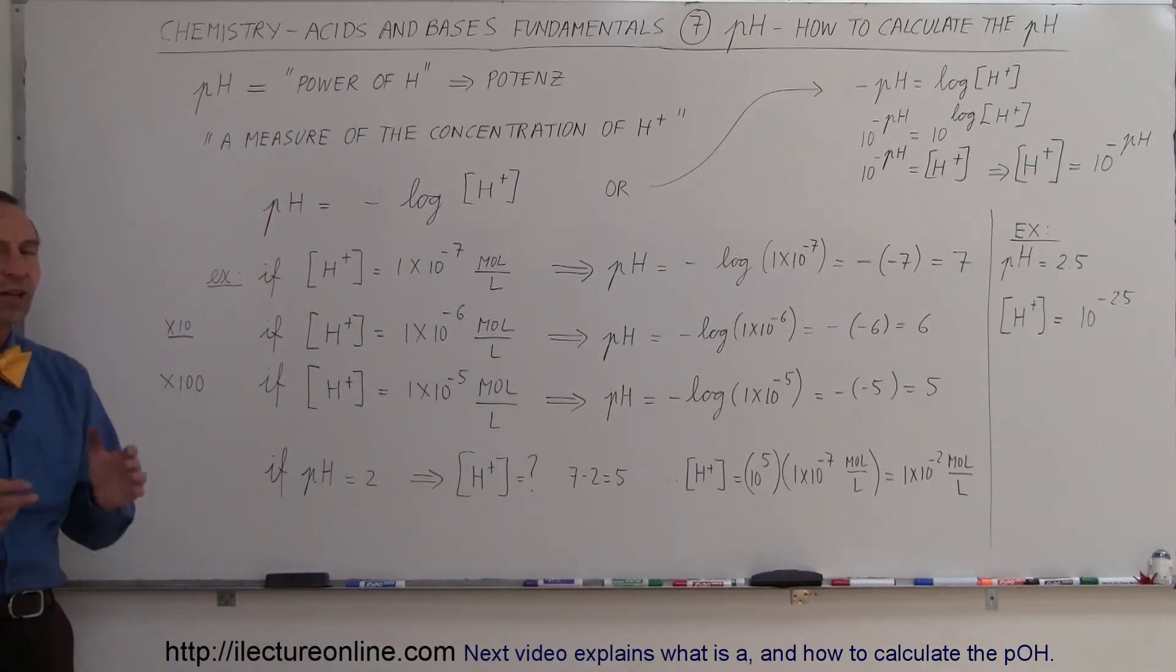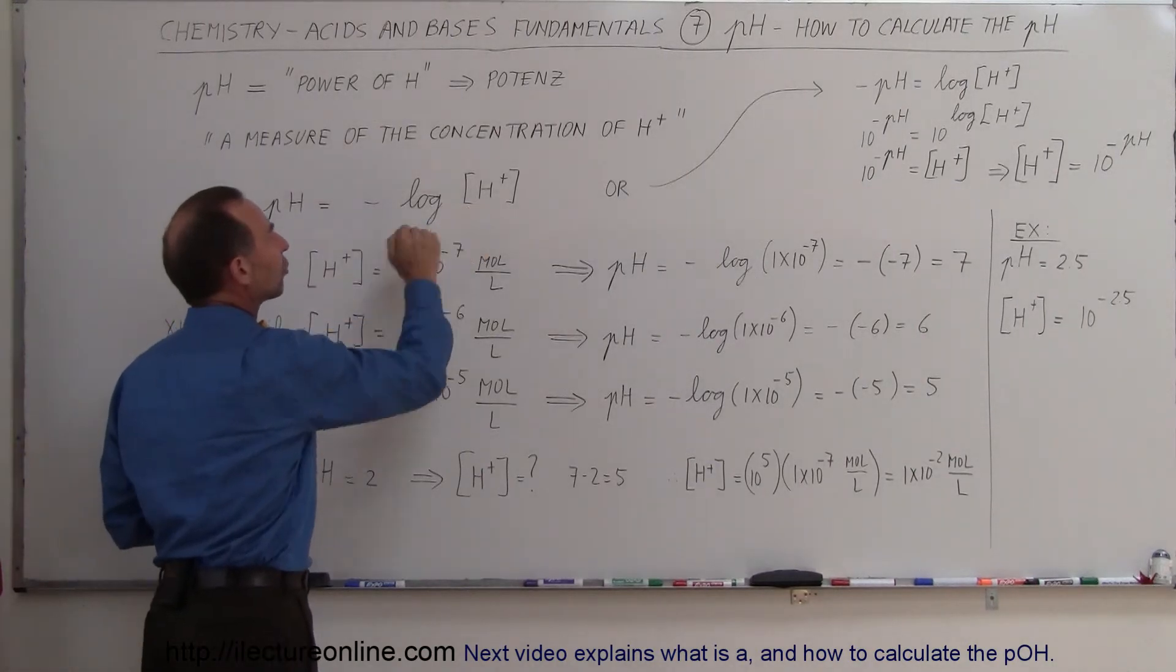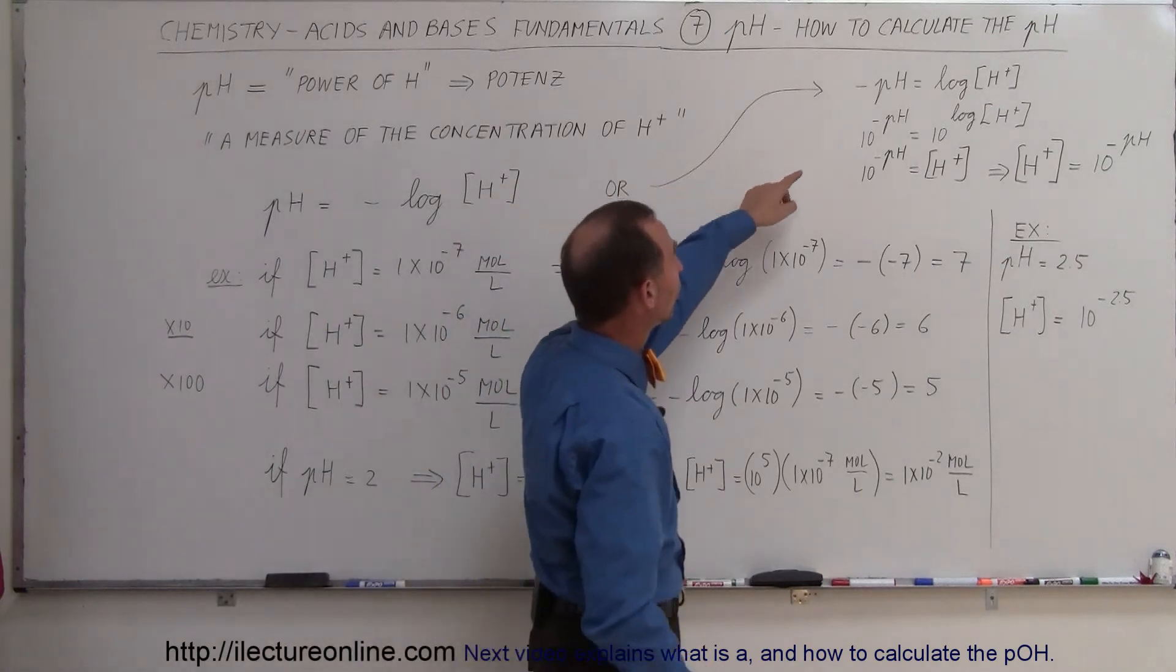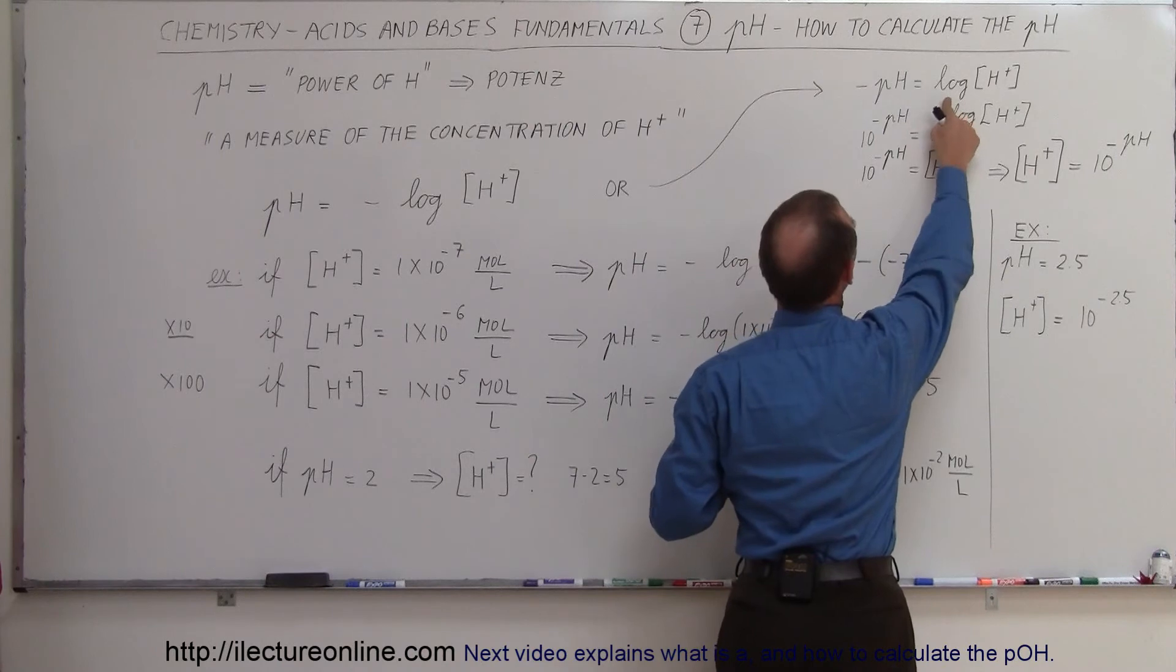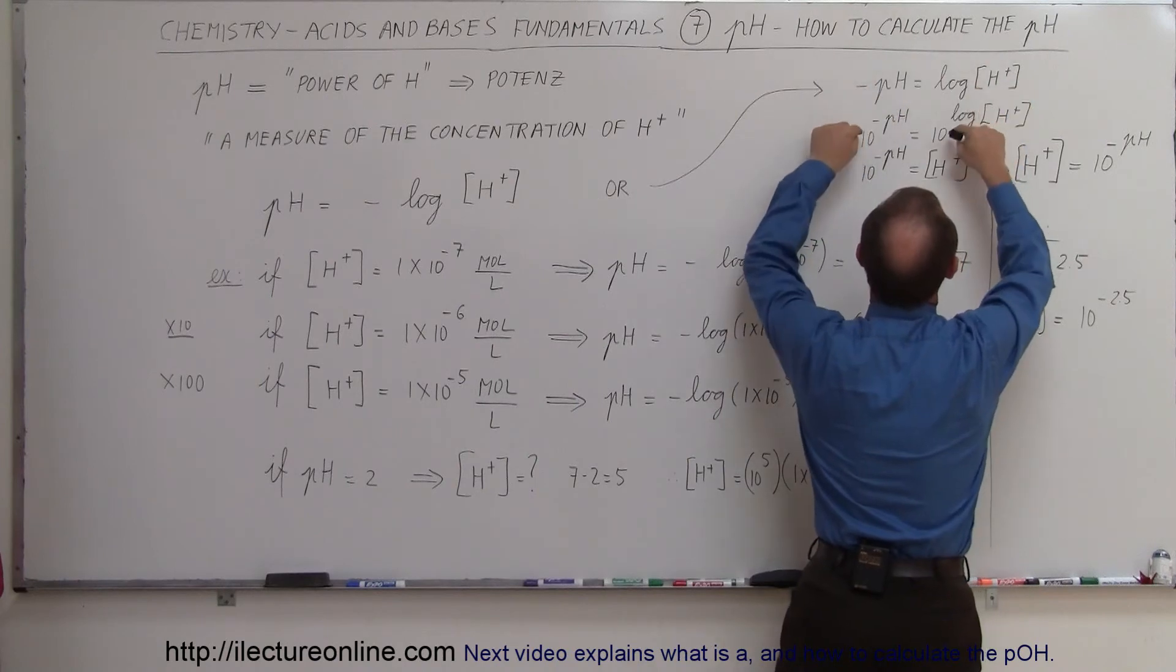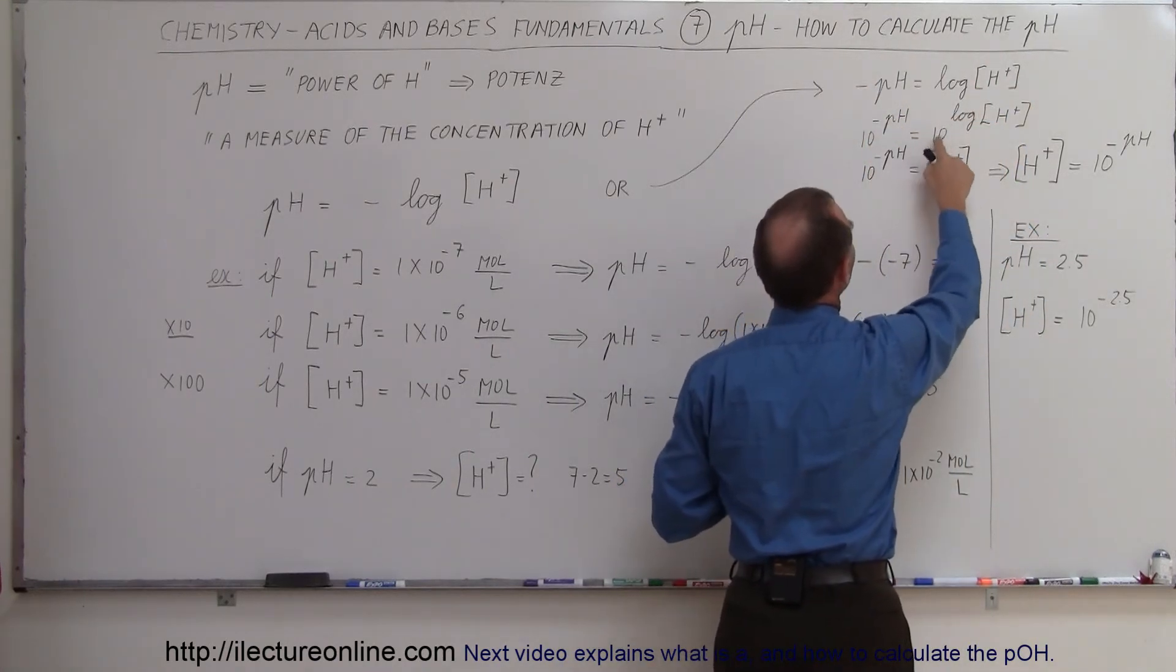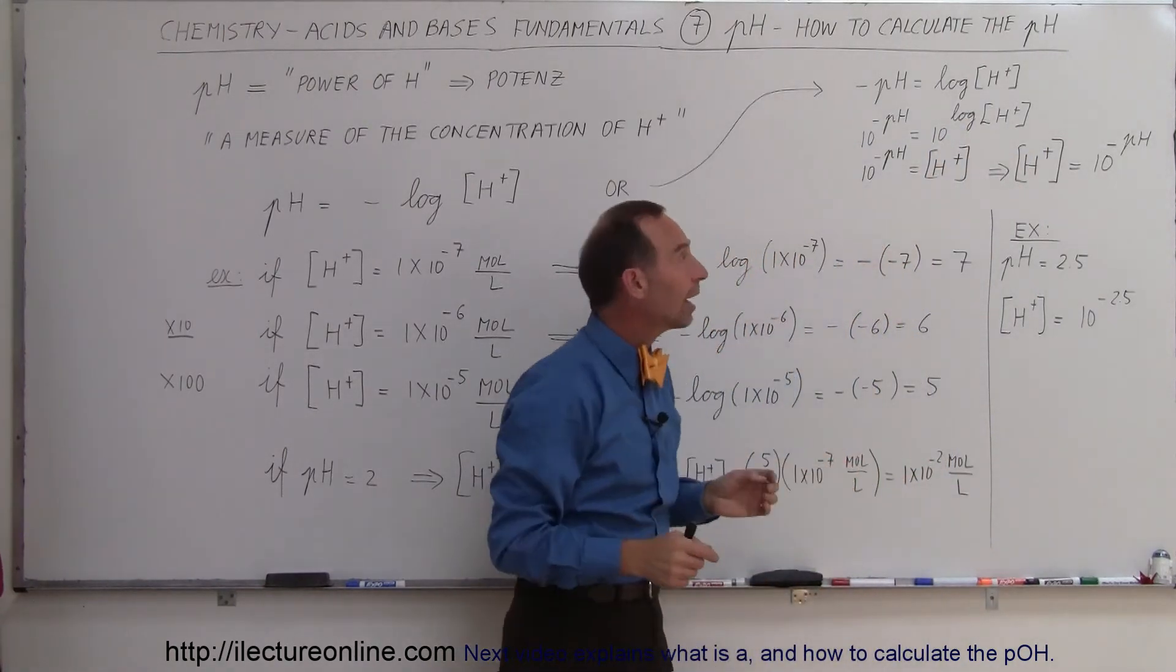Now, if you want to reverse that in a more mathematical sense, you can take this very same equation and solve for the concentration of the hydrogen ion, which we did over here. So we take a negative sign, move it to the other side. So minus the pH equals the log of that. Then we take what we call the anti-log. We take both sides of the equation and raise it to the exponent 10. So on the left side, we get 10 to the minus pH. On the right side, we get 10 raised to the log of the concentration of the hydrogen ion.